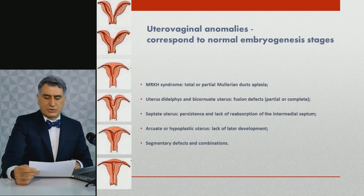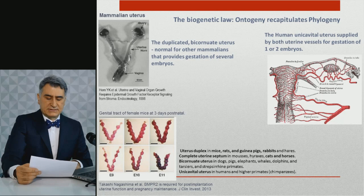Congenital uterovaginal malformations are defined as deviations from normal embryogenesis, which recapitulates phylogenesis. Each variant of anomalies corresponds to persistent developmental stages, such as Müllerian duct aplasia, fusion defects, and persistence of the intermedial septum. The biogenetic law postulates that ontogenesis, or individual morphogenesis, recapitulates phylogenesis, or evolutionary early developmental stages.